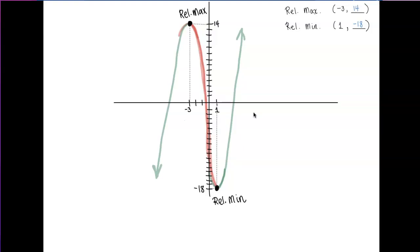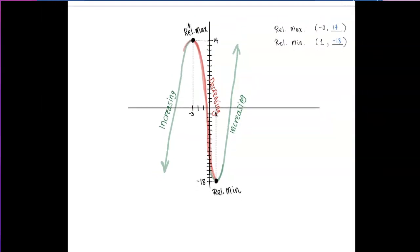I'm going to write down the word, increasing from negative infinity to negative 3, decreasing. All right, I'll try to write it down here. This is decreasing in between negative 3 and positive 1. And again, it goes back up, increasing. Okay? So, what they wanted us to do was find an interval where it is increasing or decreasing. So here we go. This graph is increasing on negative infinity to negative 3 and 1 to positive infinity.